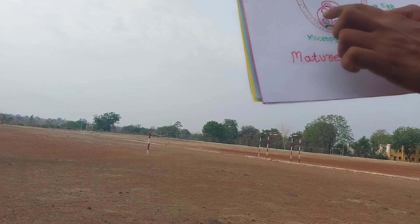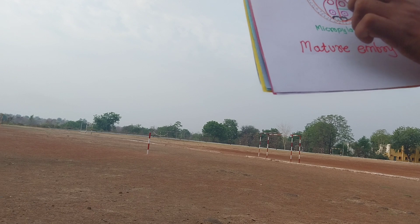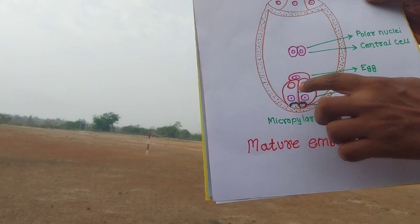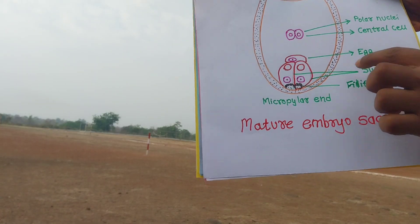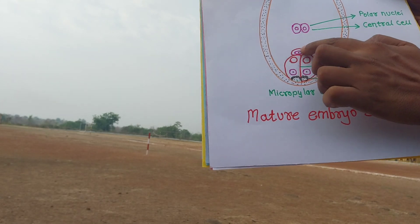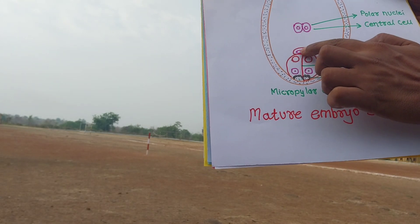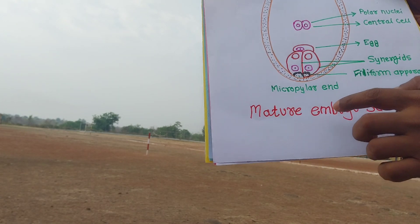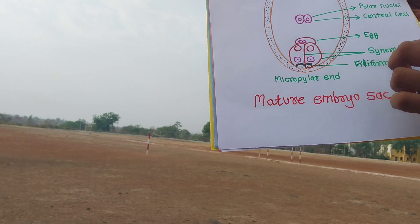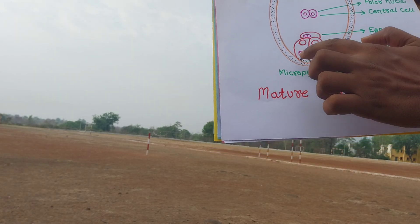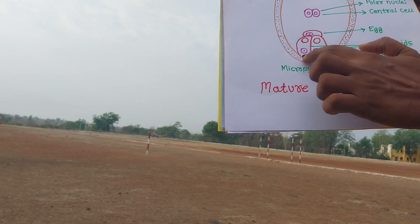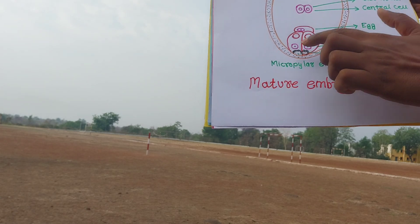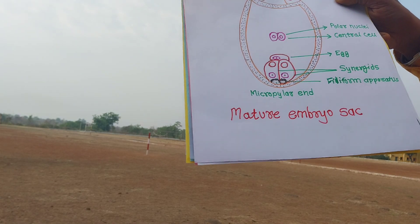So we have two synergid cells, three antipodal cells, and one egg cell — making a total cell count. The central cell has two polar nuclei. The synergid cells have a particular structure called the filiform apparatus — this is the scientific term for that structure.